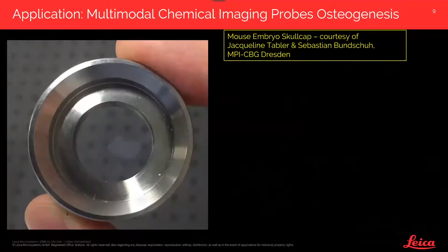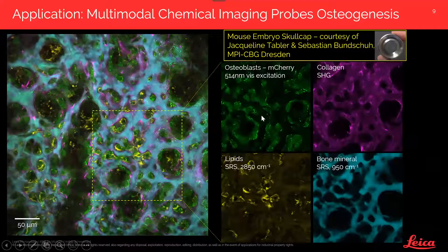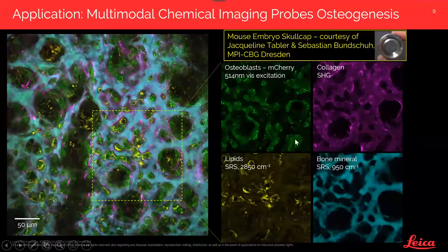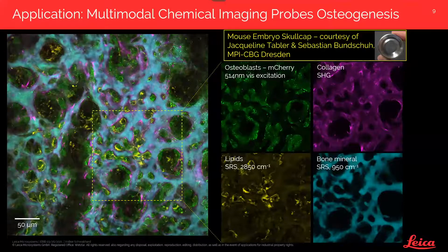Moving to tissue-related samples — this is a mouse skullcap explant, a model of osteogenesis. We can see osteoblasts labeled fluorescently with mCherry acquired through visible confocal microscopy, combined with label-free contrasts: second harmonic generation from collagen, bone mineral being deposited in those structures, and lipid contrast. This combination of molecular and label-free information opens entirely new avenues for investigating processes such as osteogenesis. In general, tissue biology is a very rich application field for such multimodal imaging.